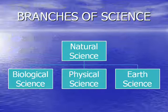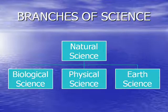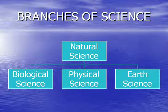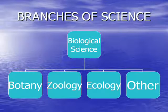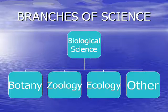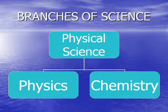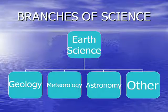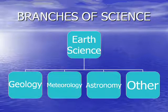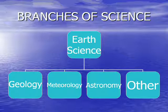There are several branches of science and we are under the natural science branch. There are social sciences, but those are taught in a different area. Under natural science there's biological science, physical science, and earth science. Biological science covers animals, plants, and earth systems. In physical science we do an introduction to physics and chemistry. Earth science includes study of rocks, study of the universe, and study of weather, along with some other earth sciences you're most familiar with.